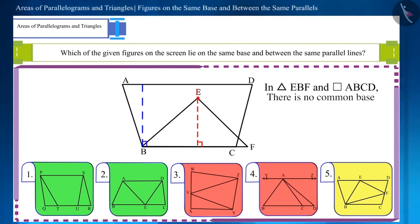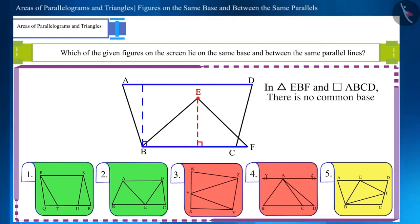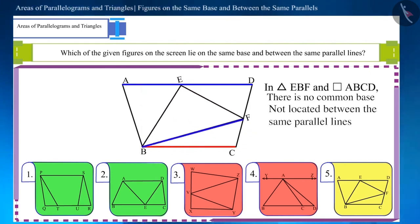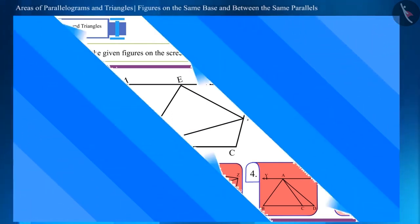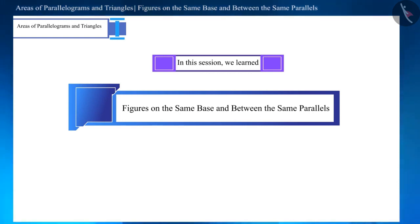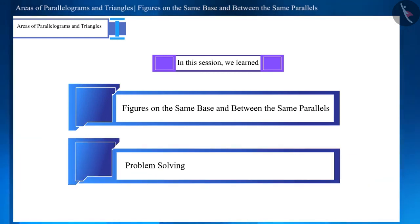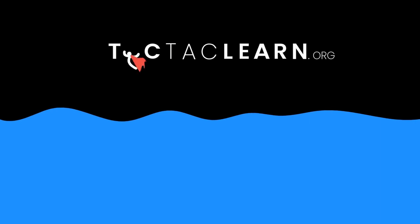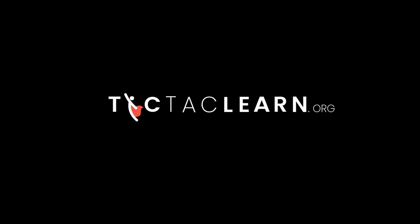The vertex E of the triangle is below the side AD. We can see that these figures are neither on the same base nor located between the same parallel lines. So that's it for today. In this session we solved a few questions related to figures on the same base and between the same parallel lines. Let's meet in the next video. Thank you.